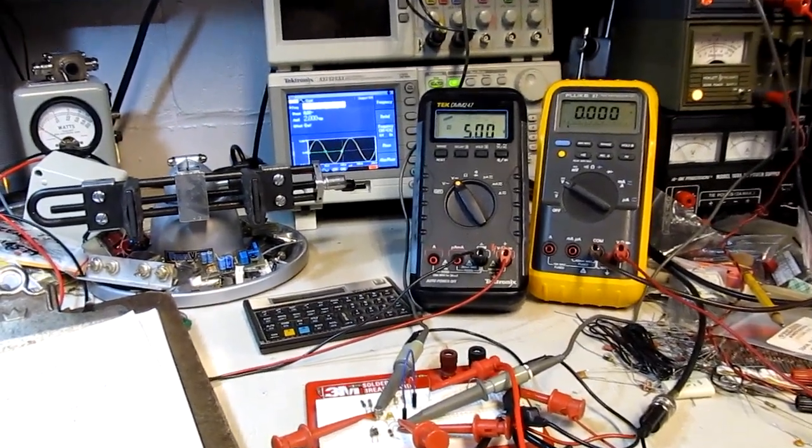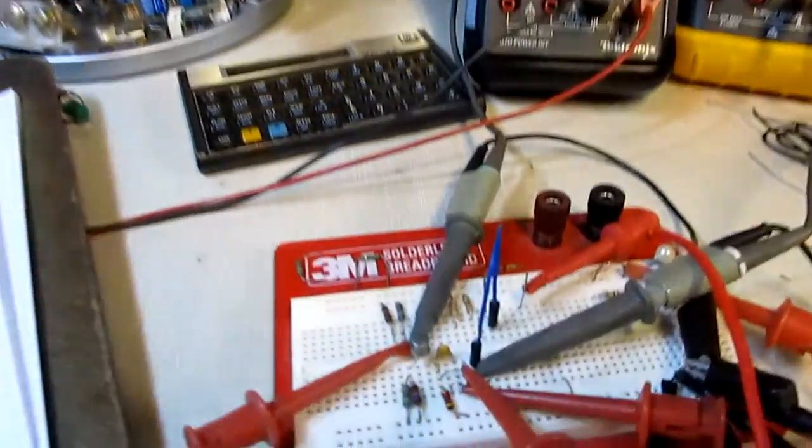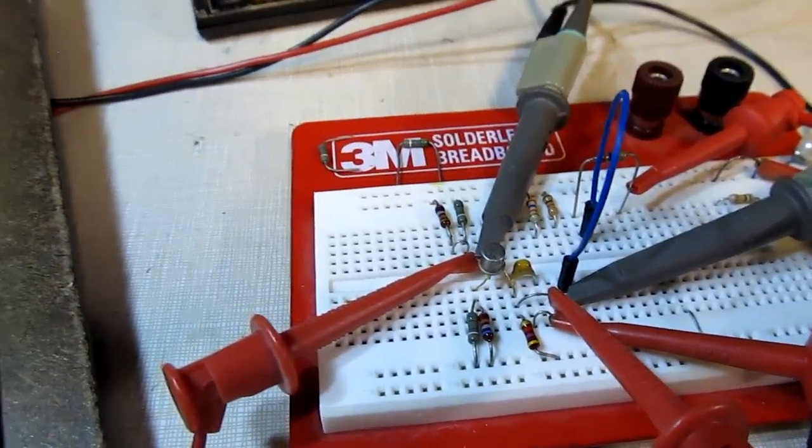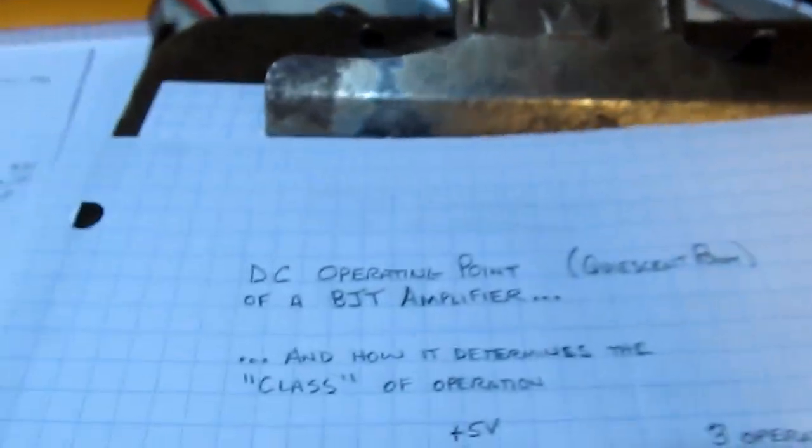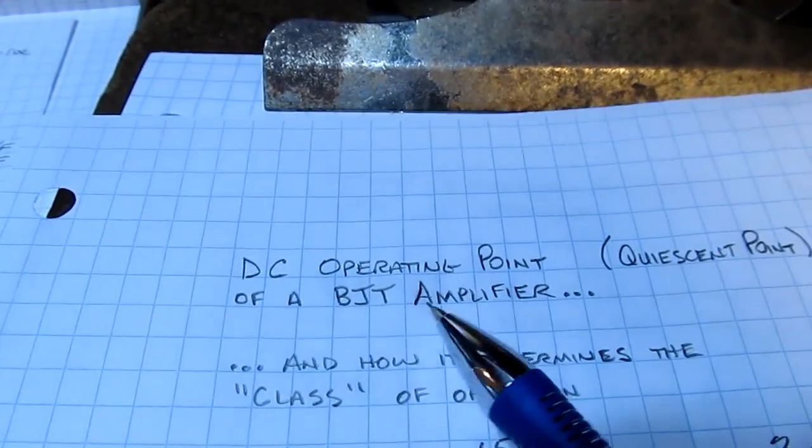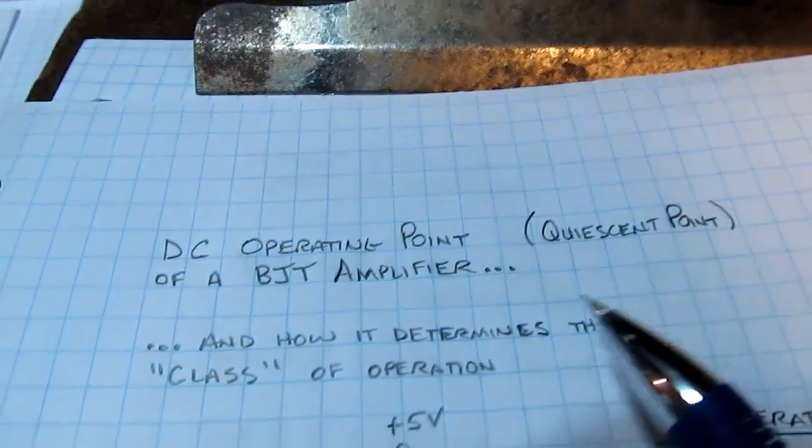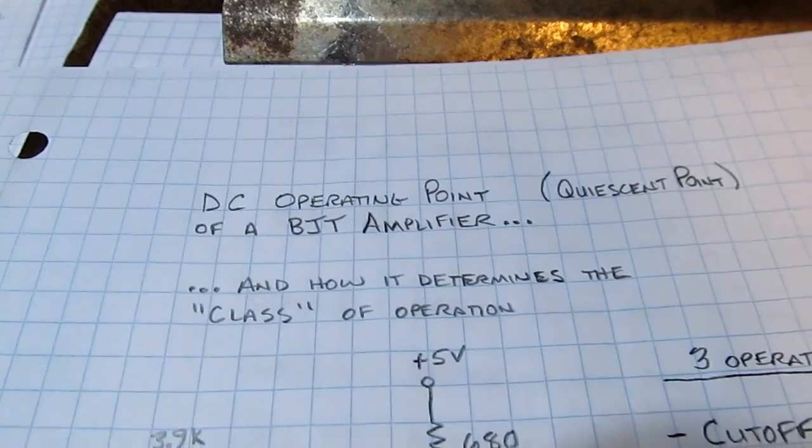Today we're going to take a back-to-basics look at a single transistor amplifier and look at the DC operating point of that transistor in the amplifier, or its quiescent point, and how that determines the class of operation.